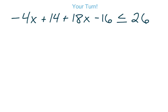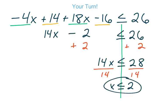Now it's your turn — go ahead and get a piece of lined paper and write this problem, solve it by yourself, and press play when you're ready to check. You should have ended up with x is less than or equal to 2. Any number less than or equal to 2 can be plugged back into the original inequality and should yield a result that's less than or equal to 26.